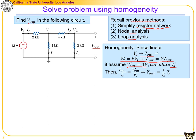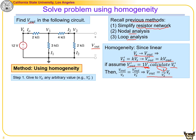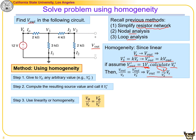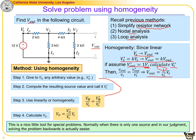Once Vs' is calculated, we know that Vout/Vs equals Vout'/Vs', which tells us Vout equals (Vs / Vs') times Vout'. The steps are: Step 1 — give V_naught an arbitrary value, say 1 volt. Step 2 — compute the resulting source value Vs'. Step 3 — apply homogeneity: Vo/Vs = Vo'/Vs'. Step 4 — calculate Vo = (Vo'/Vs') times Vs.